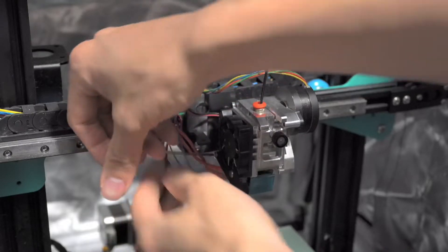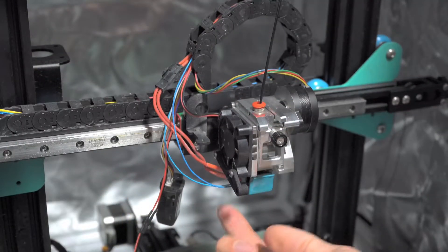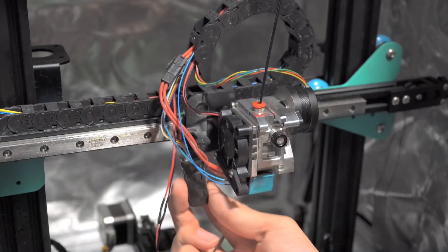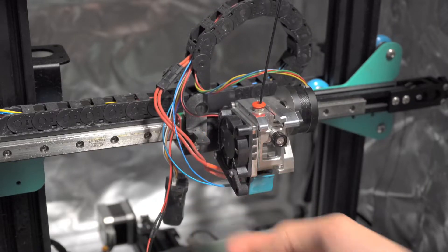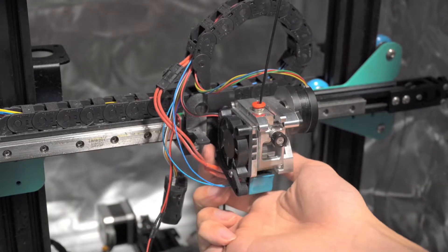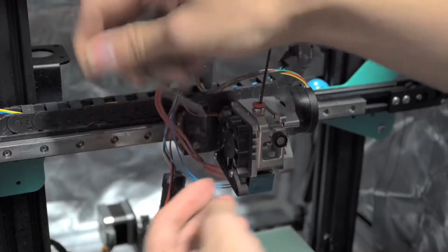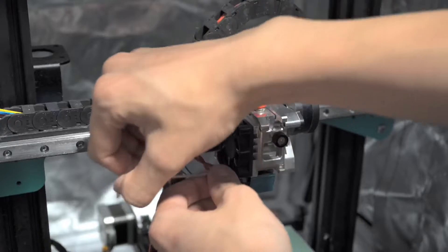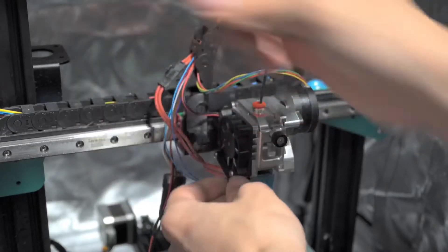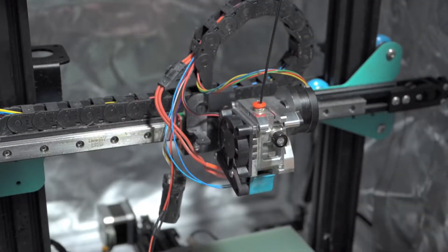Just be careful, because if you're gonna use CR touch or BL touch, same like as me, this area is hard to access after all the installation is done. So, not too tight, but just make sure that the screw will not come out with vibration or something.